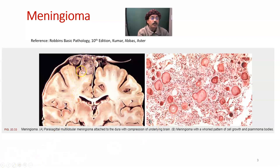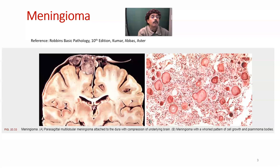The meningioma compresses the brain, so signs and symptoms depend on which part of the brain is compressed. If it involves the visual cortex, the person may have blurring of vision. If it involves the 8th cranial nerve, the person may have hearing loss. If it is over the olfactory nerve or olfactory pathway, the person may have difficulty smelling. Epilepsy due to meningioma is also possible.